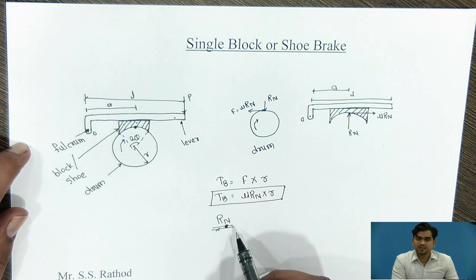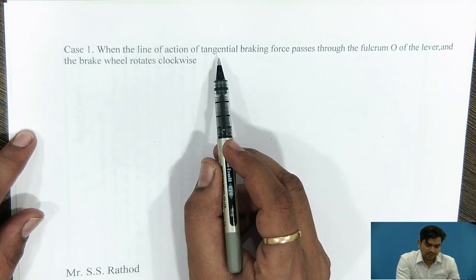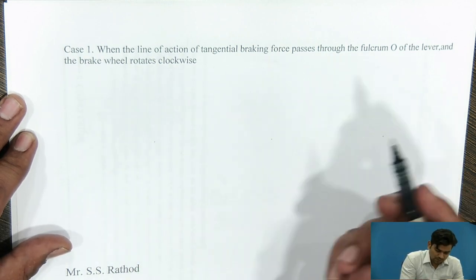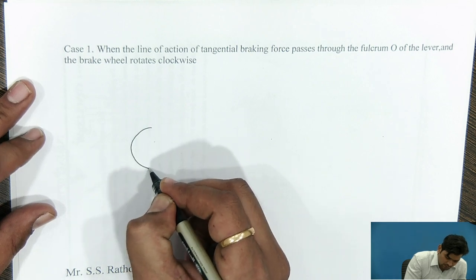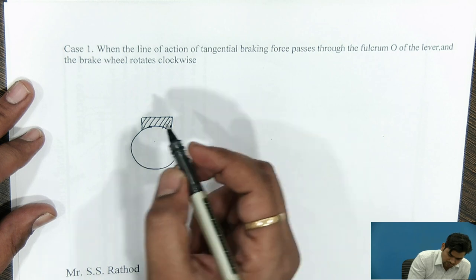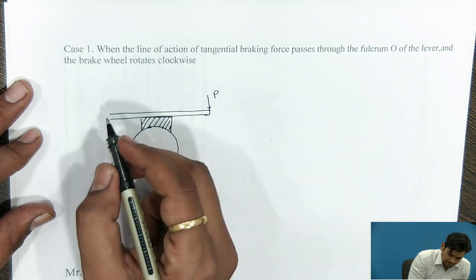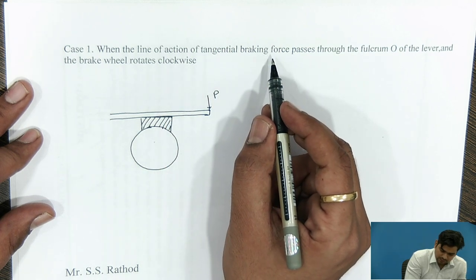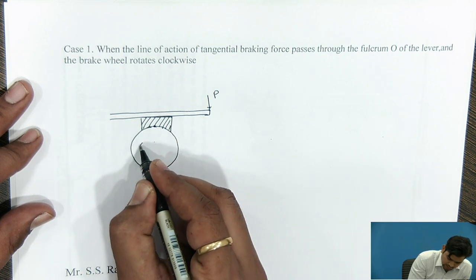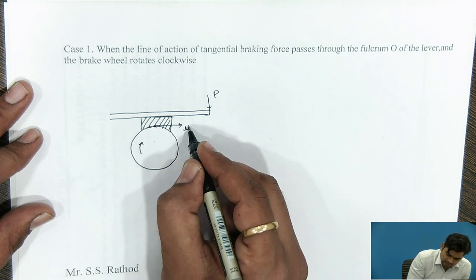There are three cases. The first case: when the line of action of the tangential braking force passes through the fulcrum O of the lever and the brake wheel rotates in the clockwise direction. This one is a rotating drum; this is the block or shoe, and this is the lever. Here we are applying the force P. The line of action of the tangential braking force passes through the fulcrum O — it is rotating in the clockwise direction. The braking force or friction force on the block is acting with value μRn.